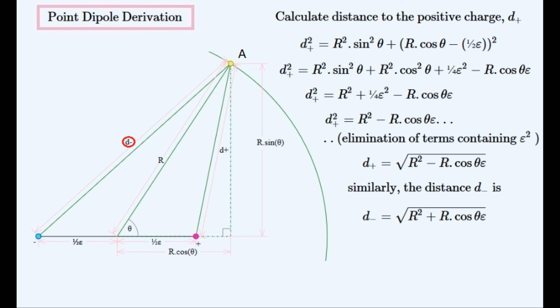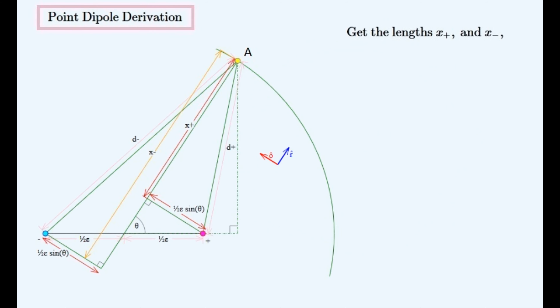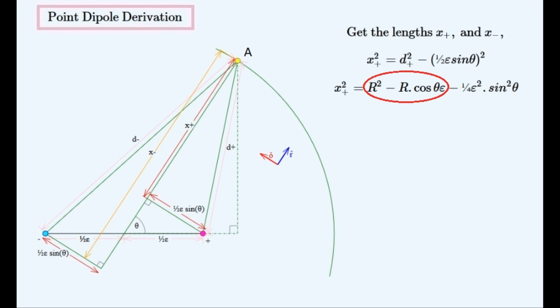D minus can be found using a similar method. Here is a quick look at the circular unit vectors — notice that they change as we move around the circle. These are the unit vectors we'll be using to calculate the electric field. Now to get the lengths X plus and X minus, which are the components of these distances in the R direction, or direction away from the center. We'll get X plus squared using Pythagoras' theorem and substitute the expression for D plus. Notice that X plus is equal to D plus, which will make our calculations a lot easier.